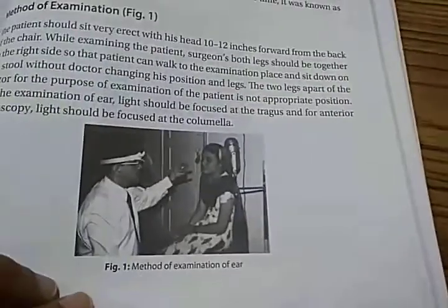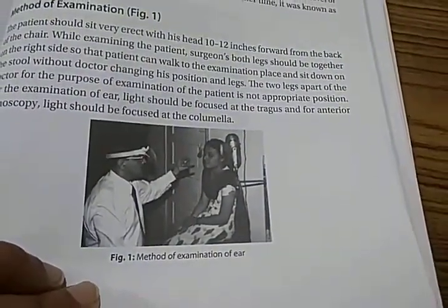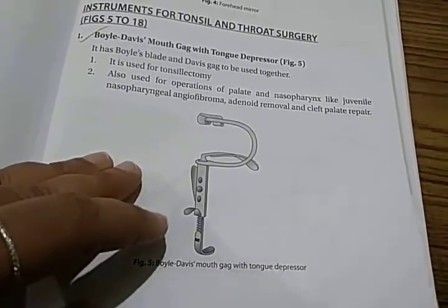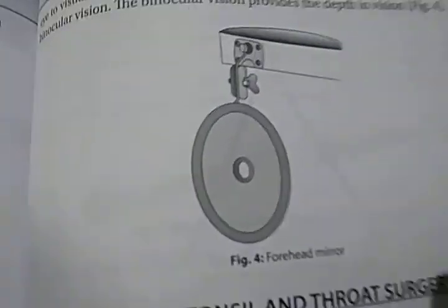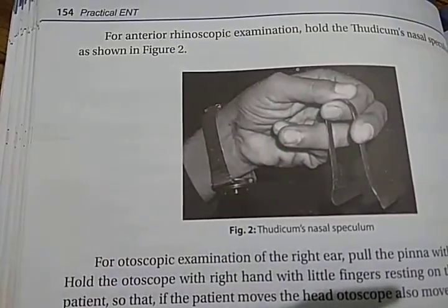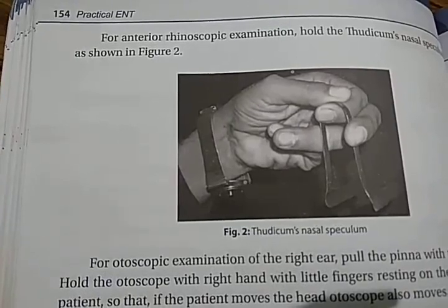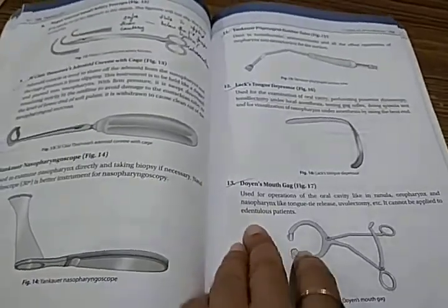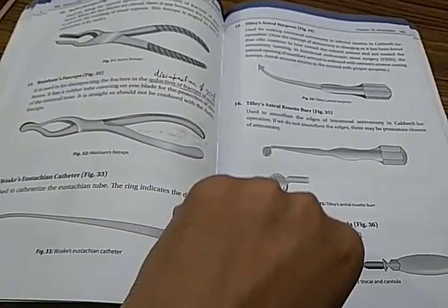Index of ENT instruments - these are the instruments. Method of examination of ear. This is an otoscopic examination of the right ear. Boyle-Davis mouth gag with tongue depressor. Forehead mirror. This is the Thudichum's nasal speculum - this is very important, guys. A lot of other instruments - you can look at all these instruments for your spotters.